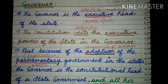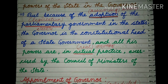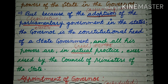But because of the adoption of the parliamentary government in the states — अपनाना — परन्तु कारण होता है कि parliamentary सरकार अपनाई जाती है state के अंदर — the Governor is the constitutional head of the state government. Constitution के according जो state का head होता है वो Governor होता है, और उसके अंदर ही सारी power निहित होती है. And all his powers in actual practice — वास्तविक रूप से — are exercised by the council of ministers of the state.